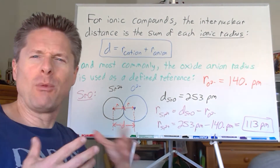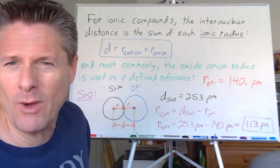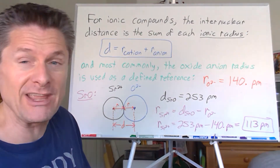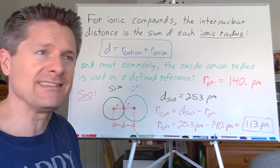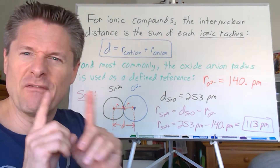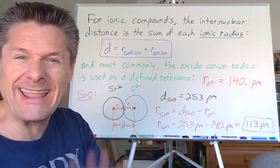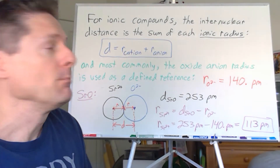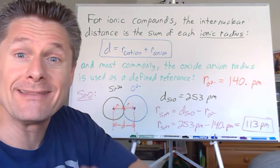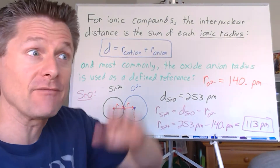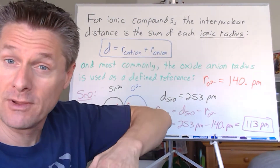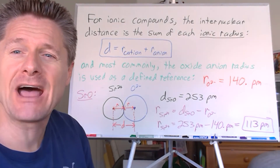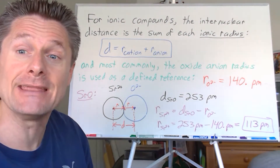We can also handle noble gases, but that's trickier — you have to freeze them down to get what's called the van der Waals radius. We won't be dealing with that here. Now let's look at periodic trends in atomic and ionic size.